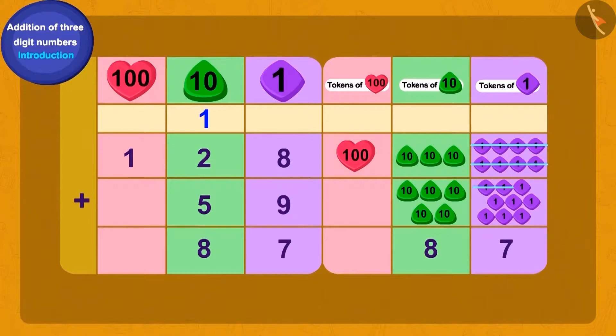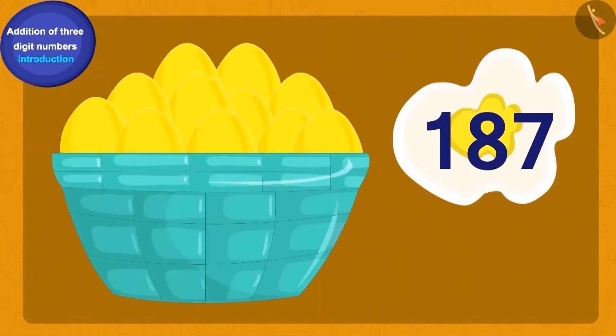Now what shall we do in the end? Yes, we would write 1 as the total number of tokens of 100. Oh, wow! Baban now had a total of 187 gold eggs.